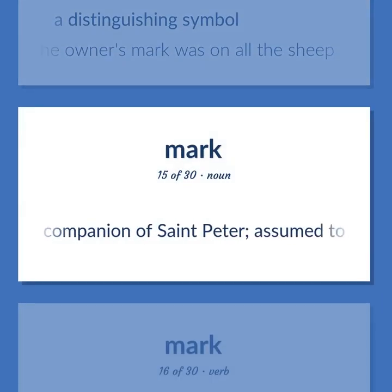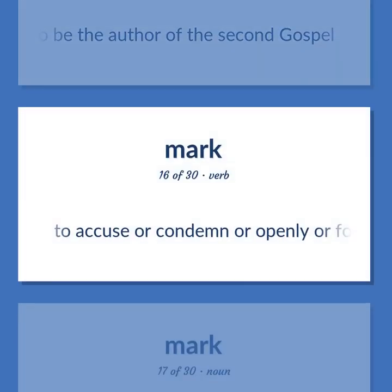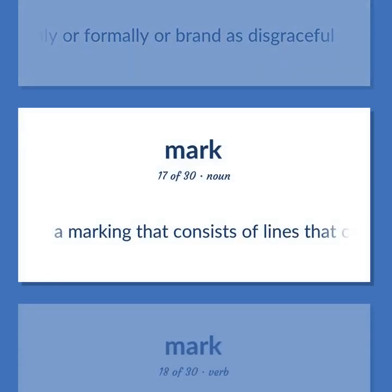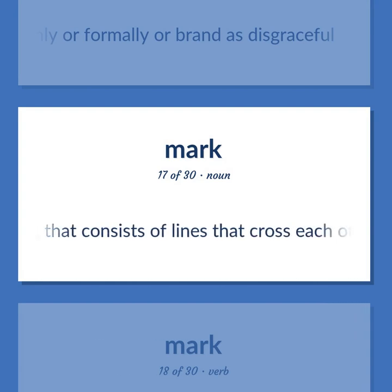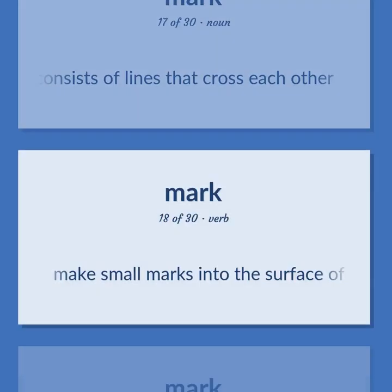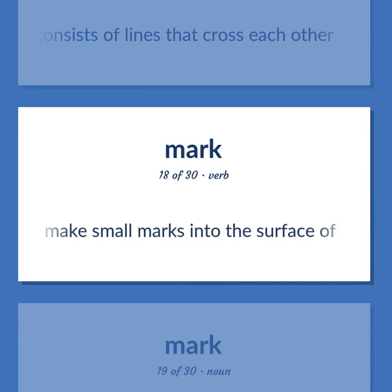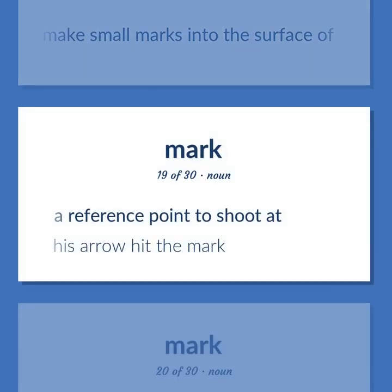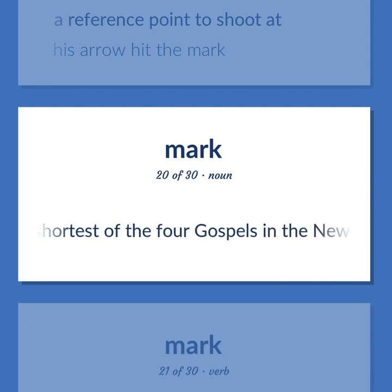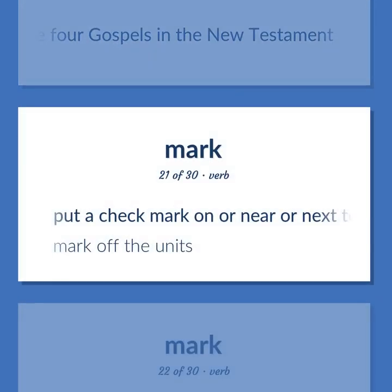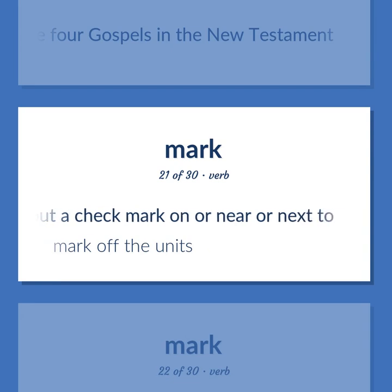Mark: Apostle and companion of Saint Peter, assumed to be the author of the second gospel. To accuse or condemn or openly or formally brand as disgraceful. A marking that consists of lines that cross each other. Make small marks into the surface of. A reference point to shoot at — his arrow hit the mark. The shortest of the four gospels in the New Testament. Put a check mark on or near or next to — mark off the units.